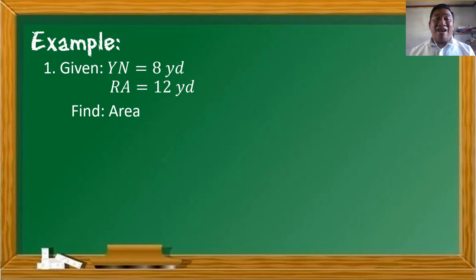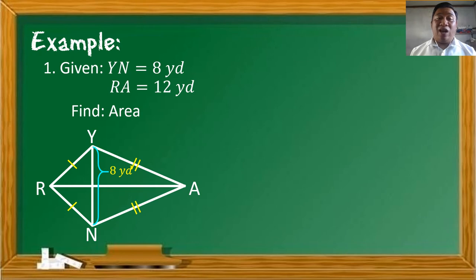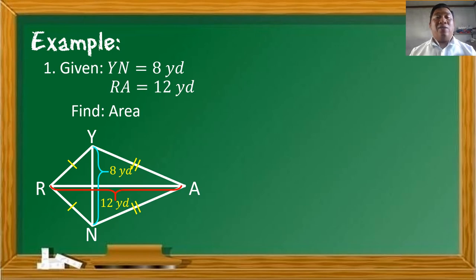Example 1: Given that the measure of diagonal Y-N is equal to 8 yards and the measure of diagonal R-A is equal to 12 yards, find the area of kite R-Y-A-N. Here is our kite R-Y-A-N with diagonals Y-N and R-A. We simply follow the formula.